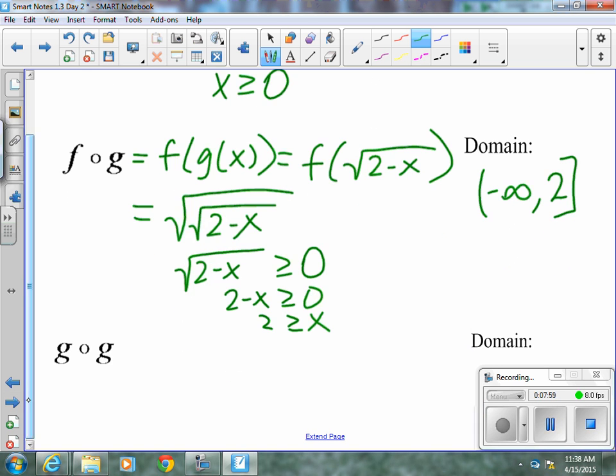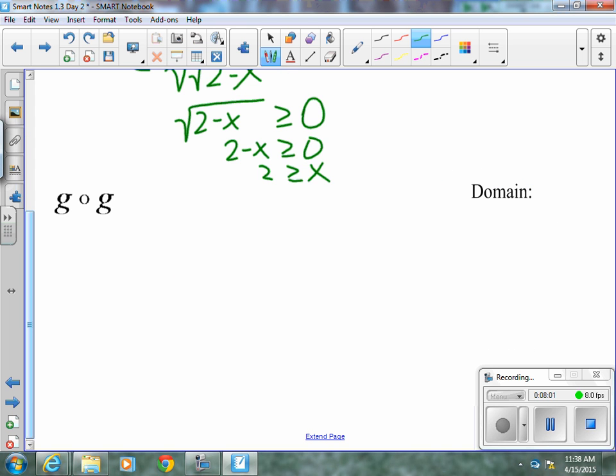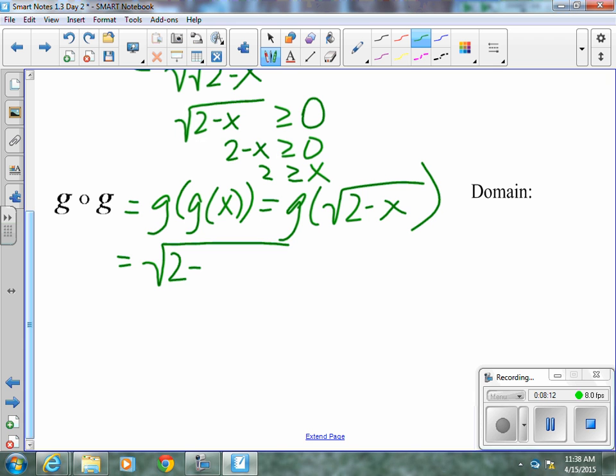Now, on g of g, we are finding, plugging g into g. We're taking g of radical 2 minus x. Which gives us radical 2 minus radical 2 minus x.